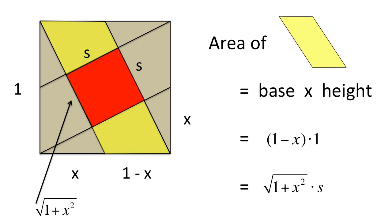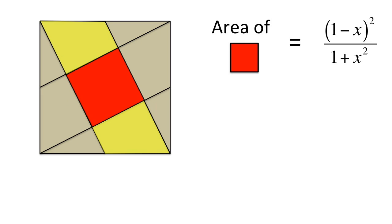Since the area of the red square is s squared, these expressions can be combined to produce the area in terms of x.